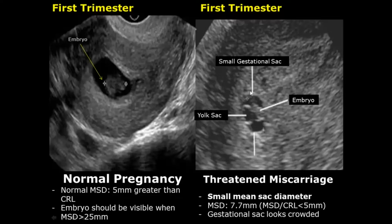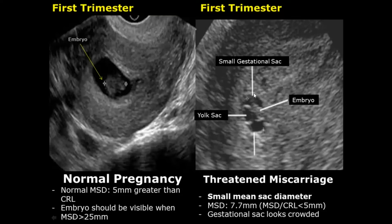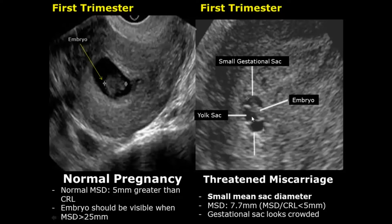The next feature is a small mean sac diameter. In normal cases, the mean sac diameter must be at least 5 millimeters greater than the crown-rump length. The embryo must be visible when the MSD crosses 25 millimeters. But here you can see the embryo and the yolk sac, yet the gestational sac is very small — the MSD is only 7.7 millimeters — making the gestational sac look crowded.